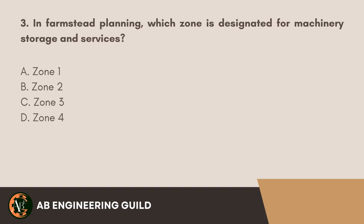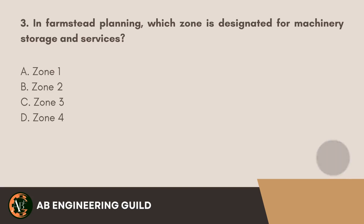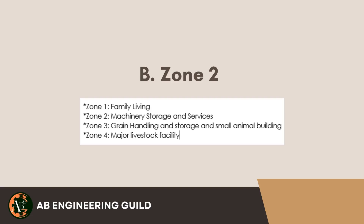Question 3: In Farmstead Planning, which zone is designated for machinery storage and services? A. Zone 1. B. Zone 2. C. Zone 3. D. Zone 4. Answer: B. Zone 2.